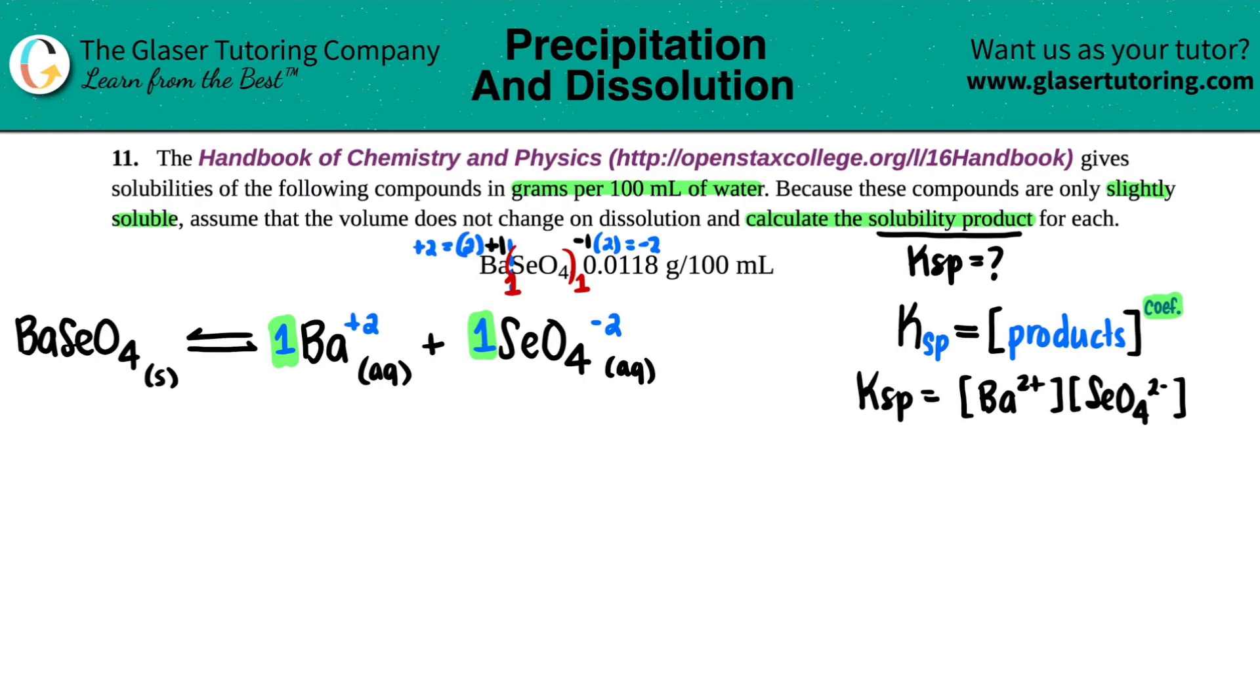But now the thing is, do we know what the concentration of the barium is? And do we know what the concentration of the SeO4 is? Not really, not yet. The only thing that we know is that this whole compound was 0.0118 grams per 100 mils. Remember, if we're trying to solve for a concentration, we want to find the molarity. And the molarity units are always moles per liter.